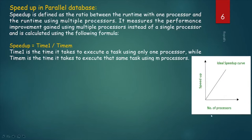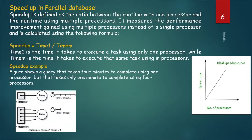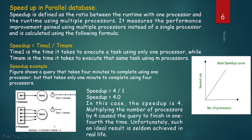This is the ideal speedup curve. Take one example: a query takes 4 minutes to complete using one processor, but only 1 minute to complete using 4 processors. Speedup = 4 minutes / 1 minute = 4. So the speedup is 4. Multiplying the number of processors by 4 causes the query to finish in one-fourth of the time.